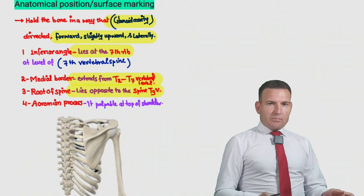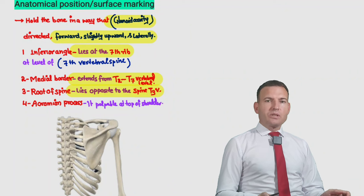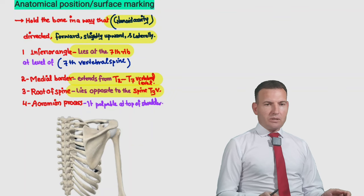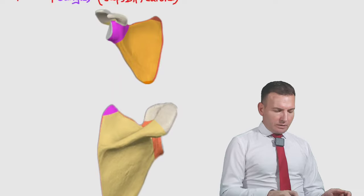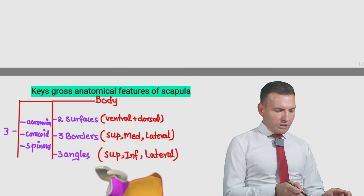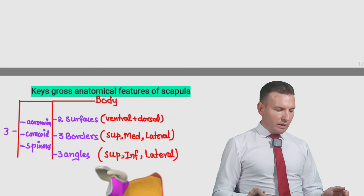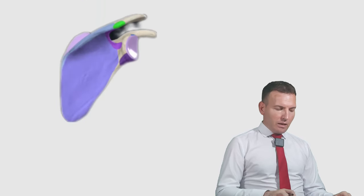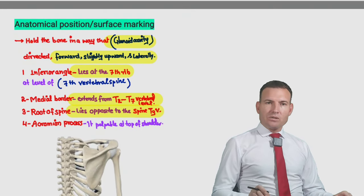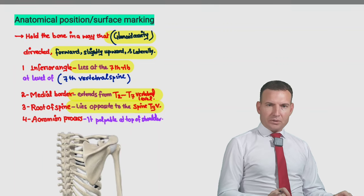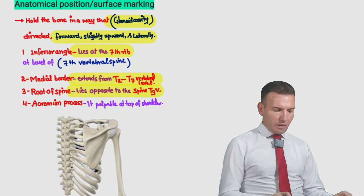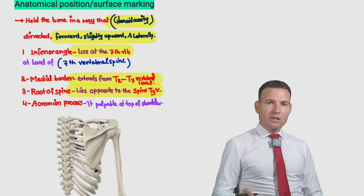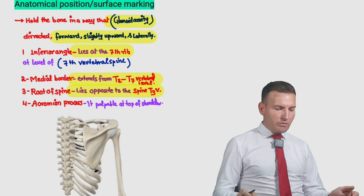In the previous lecture of scapula part 1, we discussed the introduction to scapula, site determination, and different clinical features. We covered three angles, three borders, two surfaces, and three acromial processes. Now we will continue from where we left off and correlate basic anatomical information with clinical features. This part is very important, especially during physical examination when you examine the patient.